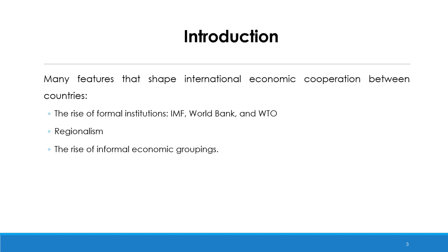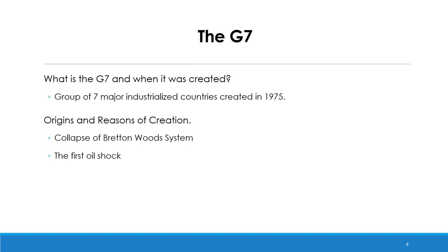The proliferation of informal economic groupings is another important feature. An example is the G7, which was created to reflect the dissatisfaction of industrialized countries with some inefficiencies of decision-making of formal institutions and their inability to tackle new important issues. The G7 is an informal group of countries that was created in 1975. It consists of seven major developed countries which collectively represent about 10% of the world's population and about 50% of the world's GDP in nominal terms. This group comprises the USA, France, UK, Germany, Italy, Japan, and Canada.